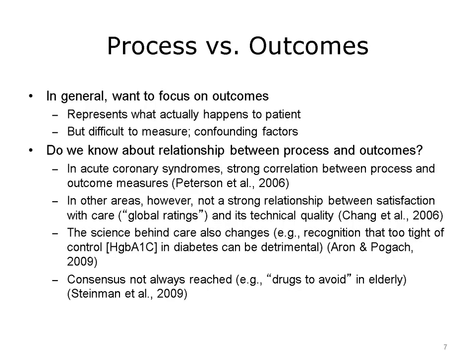In looking at process versus outcomes, many quality measures are actually measuring process, or how care was provided. But the goal is to measure outcomes — how patients respond to care, how their health improves, or how their safety is increased. Outcomes represent what actually happens to the patient. However, outcomes can be difficult to measure and also have confounding factors. The patient may receive the highest quality process care, but for some reason unrelated to that care, the patient has a bad outcome.